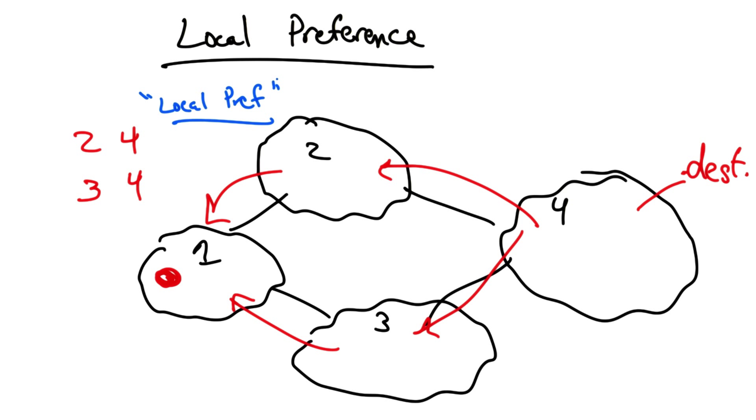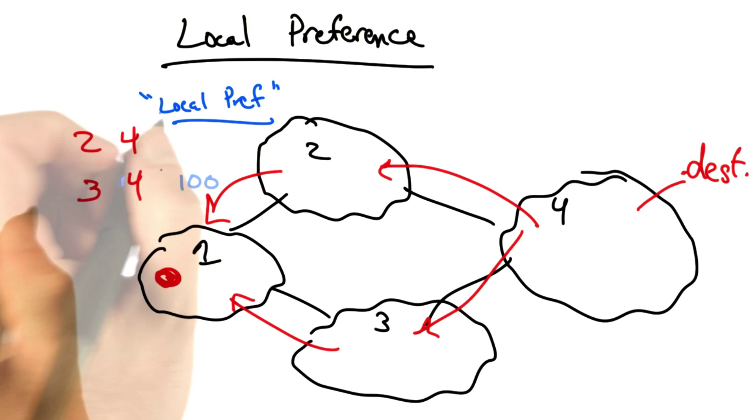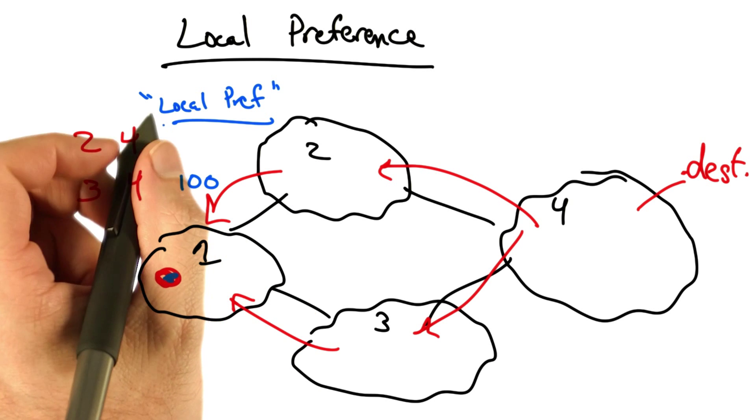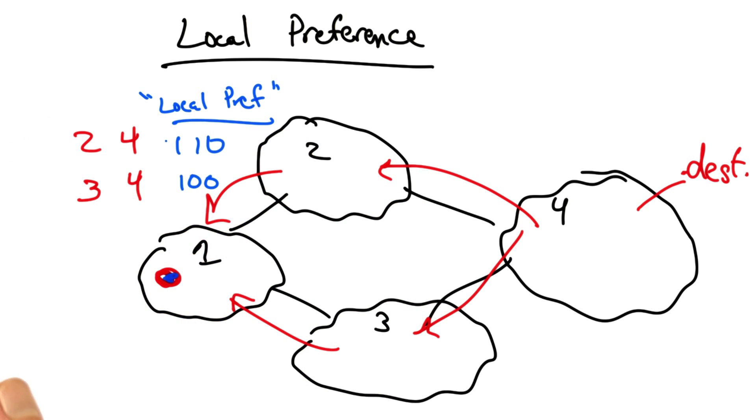Local preference, or simply local pref, allows an operator to configure the router to assign different preference values to each of the routes that it learns. The default local preference value is 100. If the operator prefers that this router select the path through AS2, it can configure the router to set a higher local preference for that route, such as 110.